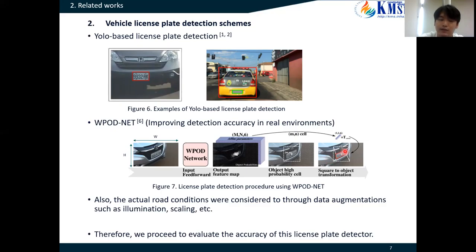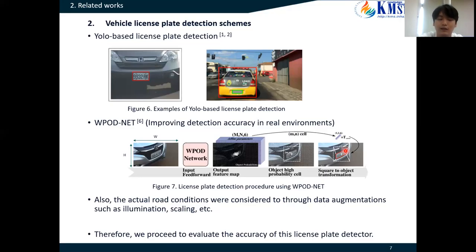As shown in Figure 7, Study 6 uses a feature map with six dimensions. The first and second dimensions have an object probability that determines whether a license plate is present. The third to sixth dimensions have the coefficients of an affine matrix for detecting license plates of arbitrary rectangular shape. Therefore, this method can handle rotation, distortion, and size changes of the vehicle license plate area. Also, real-world conditions were considered through pseudo-data augmentation such as elimination, blurring, and so on. Therefore, we analyzed the detection accuracy of the license plate detector proposed in Study 6 using our constructed dataset.